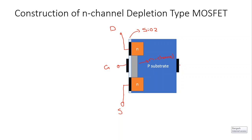We have a fourth metallic contact connected to the body of the substrate, and we can connect a terminal called SS to it. In this case we have a four-terminal MOSFET, but we can also see three-terminal MOSFETs in which the drain and source terminals are connected internally. If the substrate has a separate terminal, then we have four terminals.